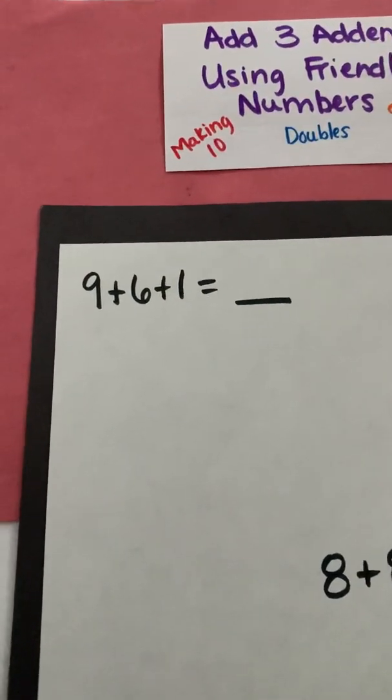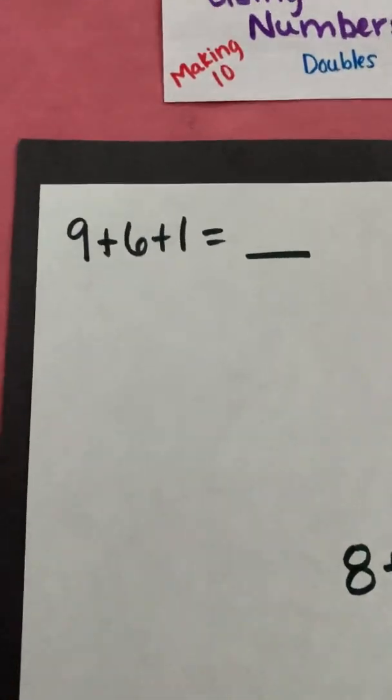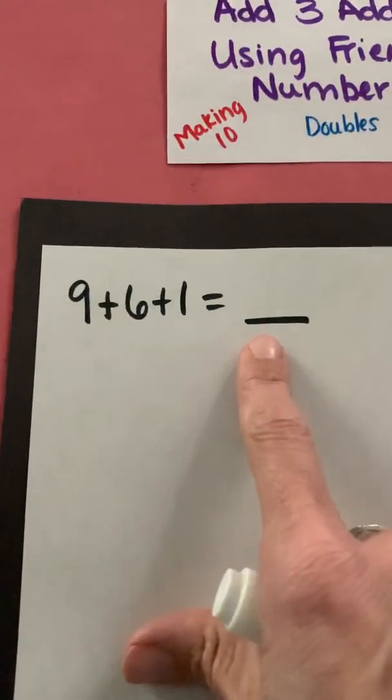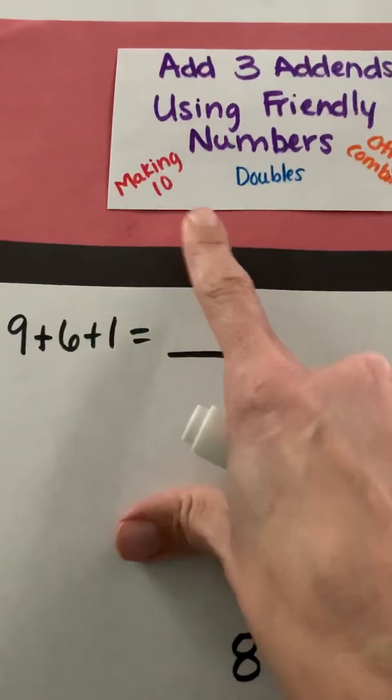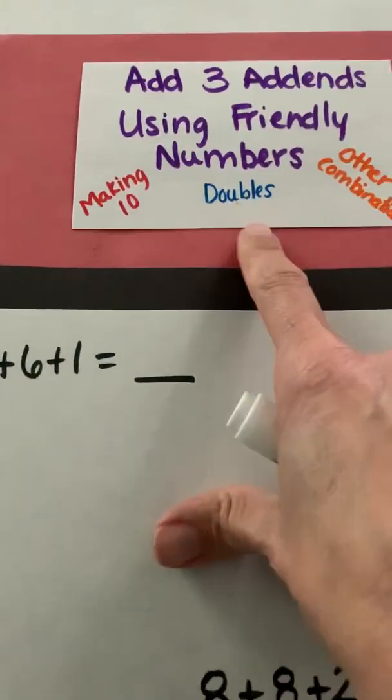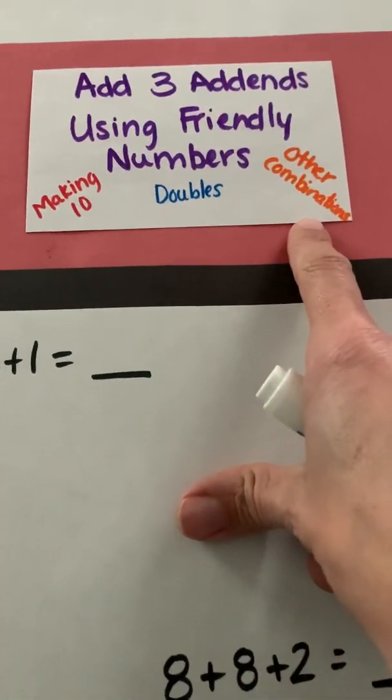So here I have 9 plus 6 plus 1. I've got my three addends and I'd like to get my sum. Remember we talked about: can I make a 10? Do I have doubles? Or do I see any other friendly combinations?